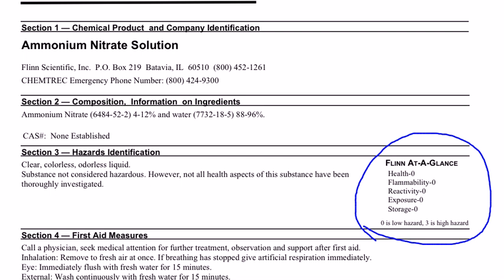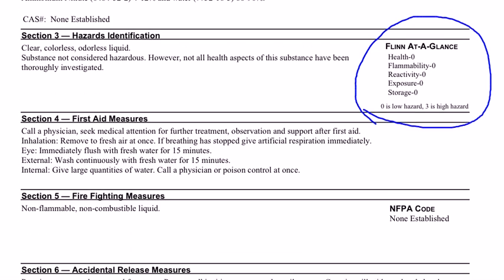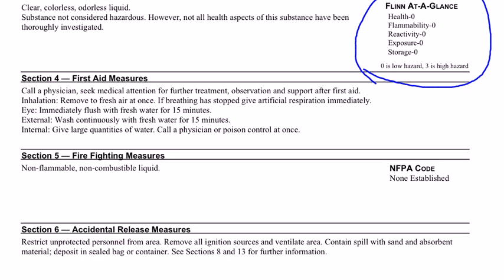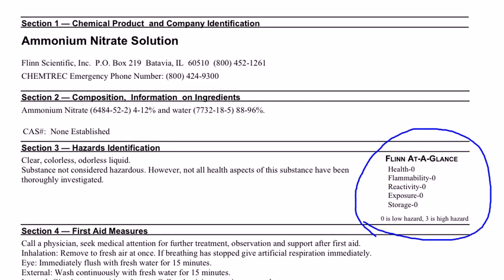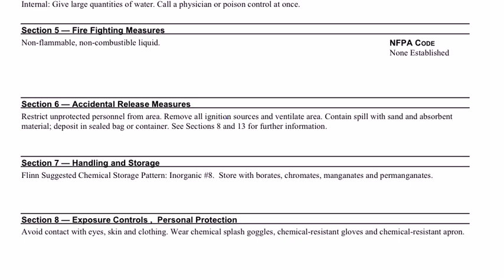Part of the reason for that is the solution we will use in lab is relatively dilute. A dilute solution is much less hazardous than a concentrated solution. This solution of ammonium nitrate is also less dangerous than solid ammonium nitrate. It's important to know what form your chemical is in, because ammonium nitrate solid or crystals have a very different chemical behavior than an ammonium nitrate solution.